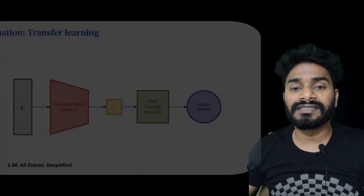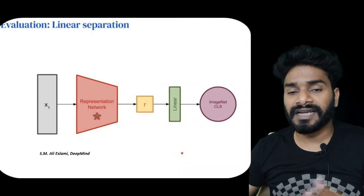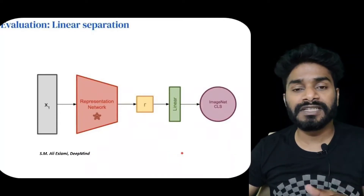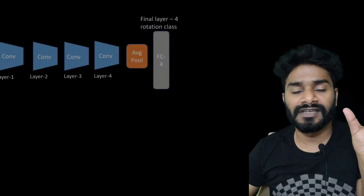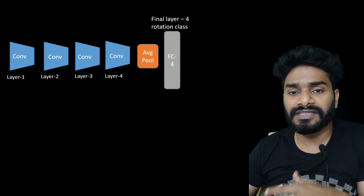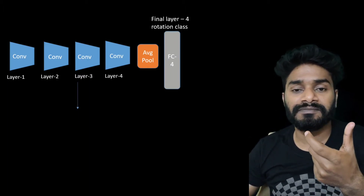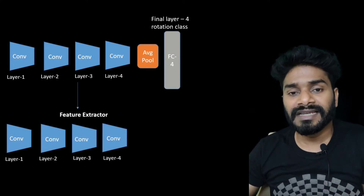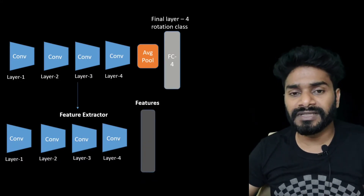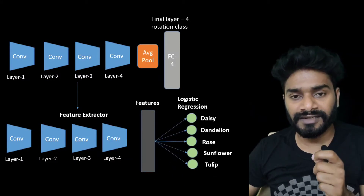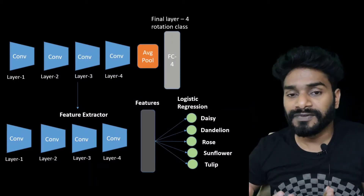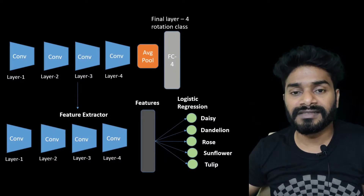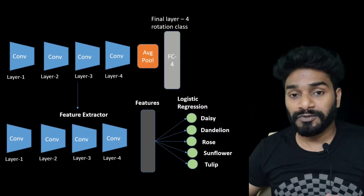Another very popular evaluation method is linear separation. The idea is that you take the features and simply train a linear classifier, say logistic regression. In our case with ResNet18, we have the conv blocks, then average pool, then a fully connected layer. We use the conv block as a feature extractor, get the features, and then train a logistic regression. If the learned features are really good, they will be linearly separable, so the task can be done by simple logistic regression without a nonlinear classifier.